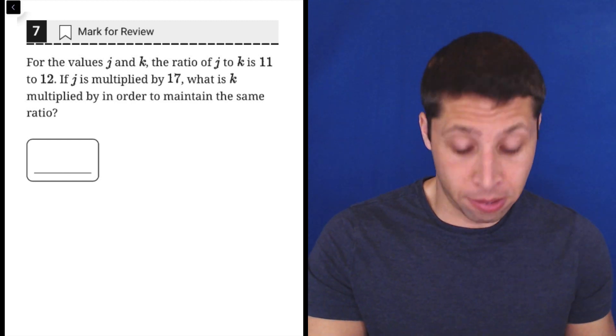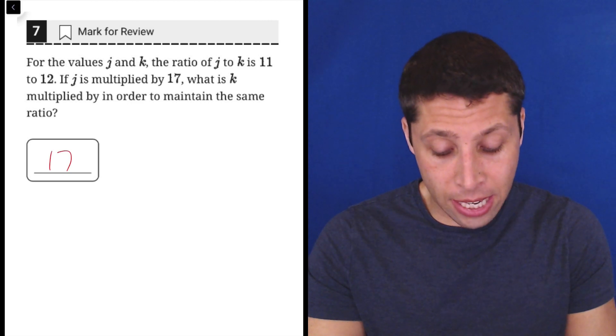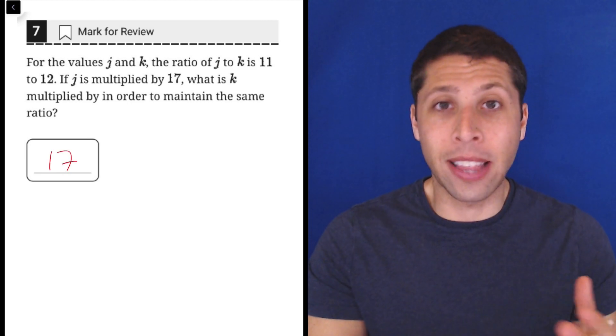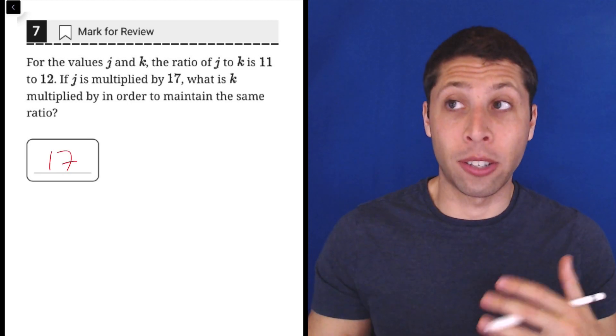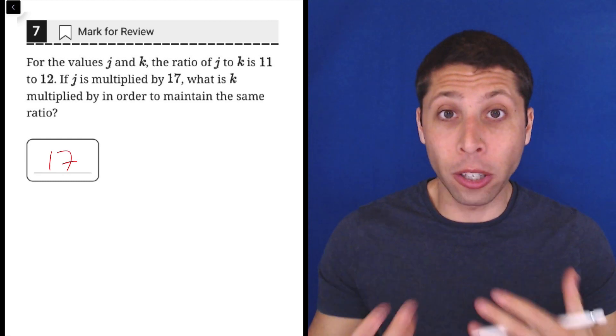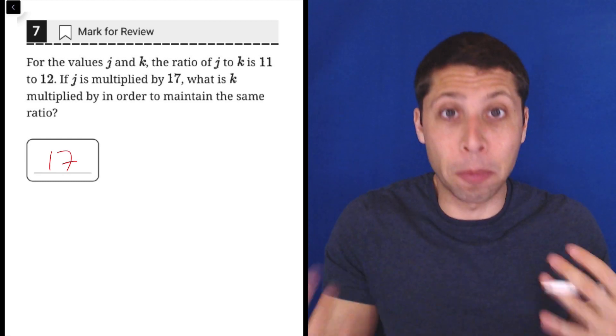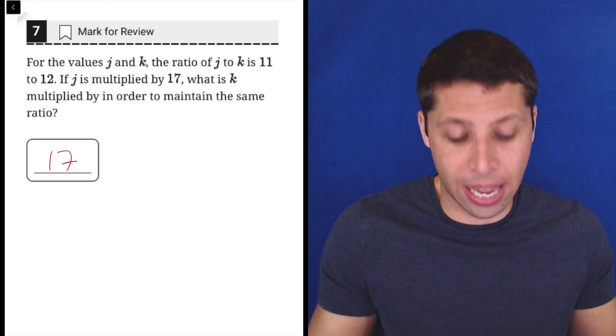Well, if you understand what a ratio is, it's just 17. And the reason is that that's the whole point of ratio, is it's a fraction. And so when you make the fraction go bigger or smaller, you've got to be even about it. So if we multiply J by 17, we're going to multiply K by 17 as well.